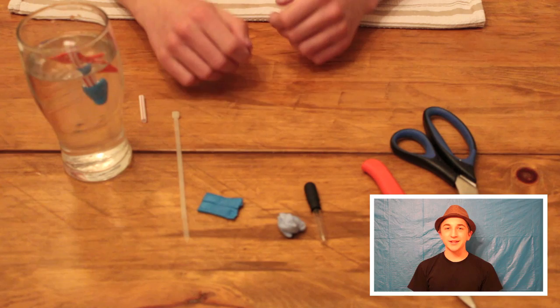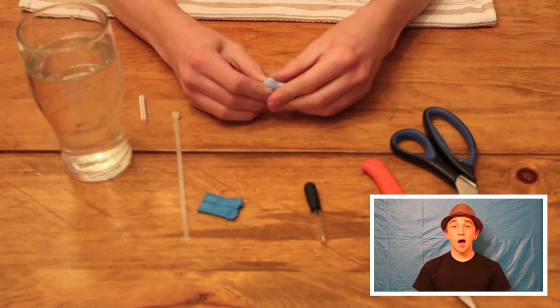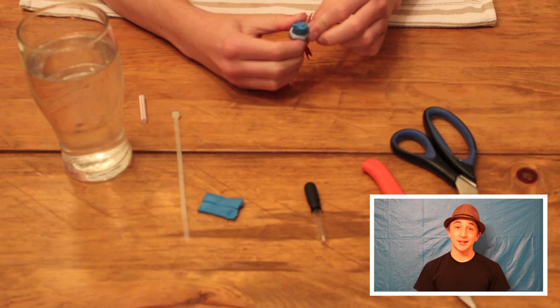Step 3. Drop the fish into your glass of water to test its buoyancy. The top of the straw or dropper should be just floating level with the top of the water. If it pops up and floats on its side or sinks to the bottom, you might need to add or subtract plaster scene to make it sit just right.